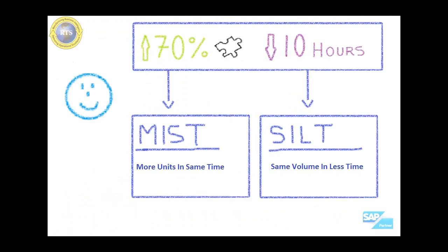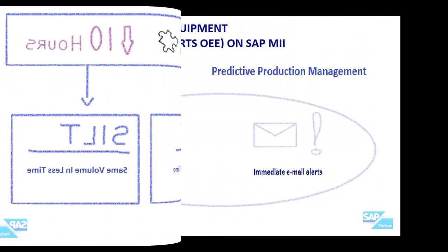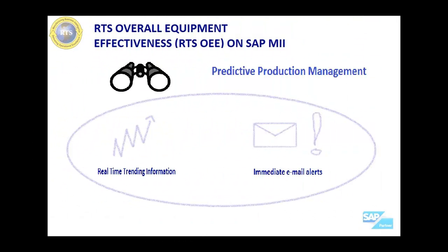OEE can be translated into the following terms: make more units in the same time, or sell same volume in less time.